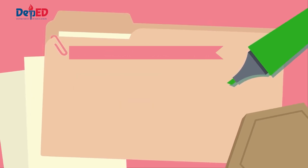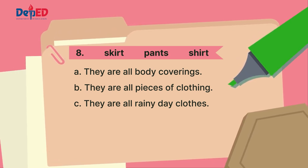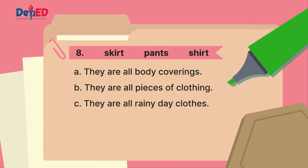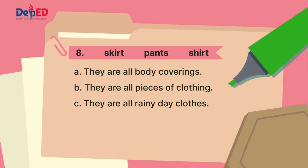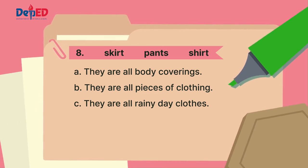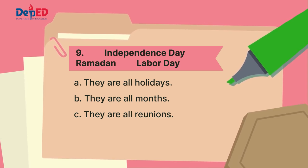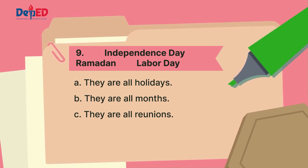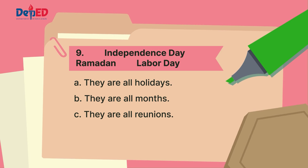The words in the box for number eight are: skirt, pants, shirt. Letter A: they are all body coverings. Letter B: they are all pieces of clothing. Letter C: they are all rainy day clothes. The words in the box for number nine are: Independence Day, Ramadan, Labor Day. Letter A: they are all holidays. Letter B: they are all months. Letter C: they are all reunions.